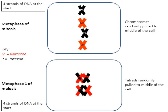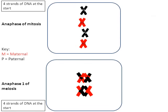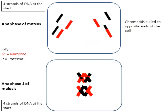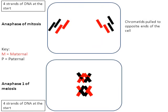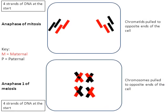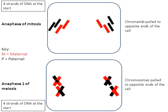Moving on to anaphase: in anaphase of mitosis, the sister chromatids are pulled apart from one another. The spindle fibers will pull one of the chromatids to the left and the other chromatid to the right — so the chromosome is ripped apart. Now in anaphase number one of meiosis, the chromosomes are pulled apart — the tetrads were pulled apart, but the chromosomes are still intact. Two entire complete chromosomes were pulled to the right, and two entire complete chromosomes were pulled to the left. That's a distinction that's different between mitosis on top and meiosis on the bottom.